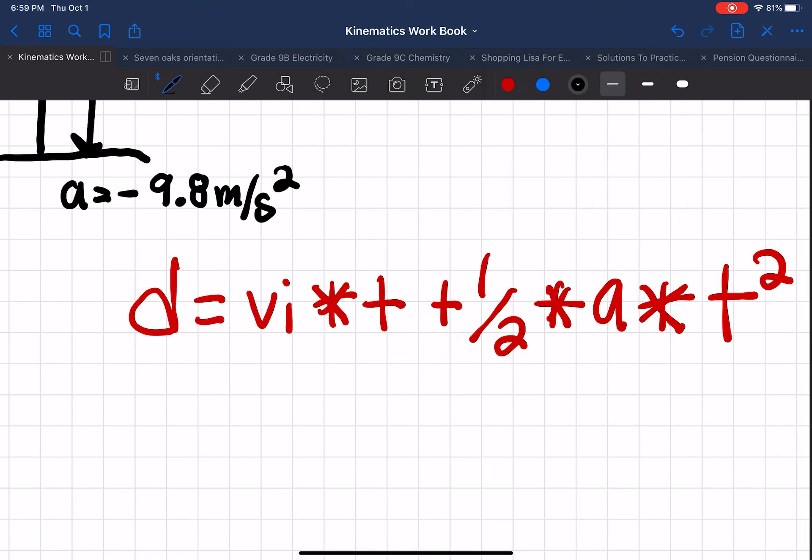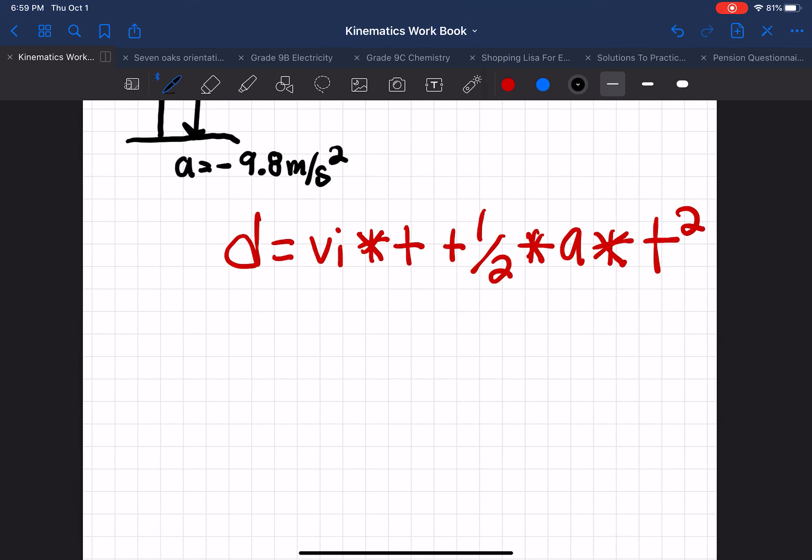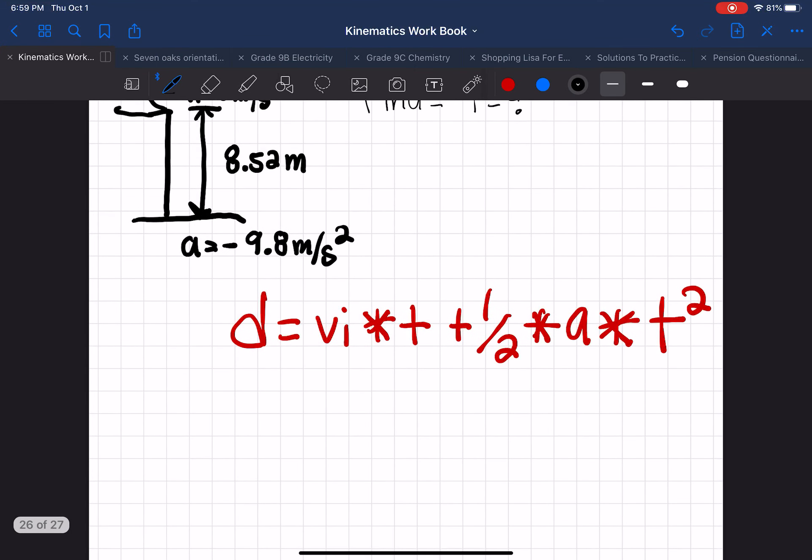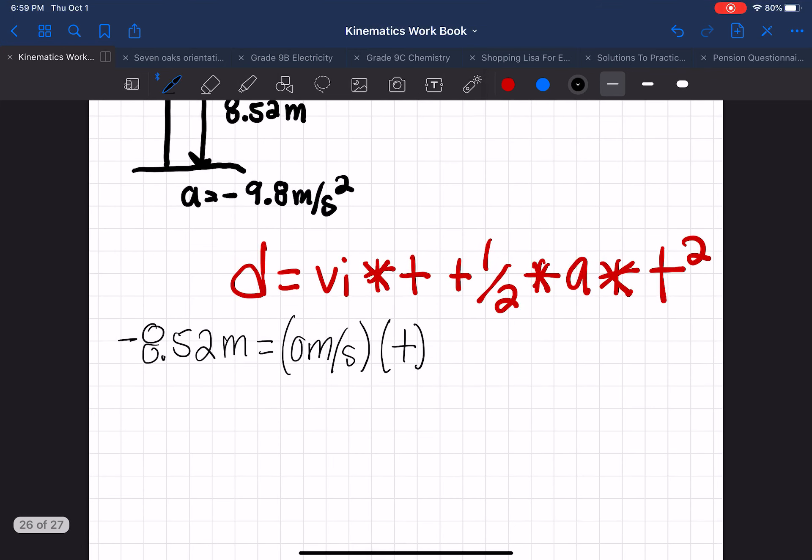And now we're going to fill in all the known variables into this equation to find for time. So minus 8.52 meters equals 0 meters per second times time, which we do not know what it is, plus 0.5 times minus 9.8 meters per second squared times time again squared.